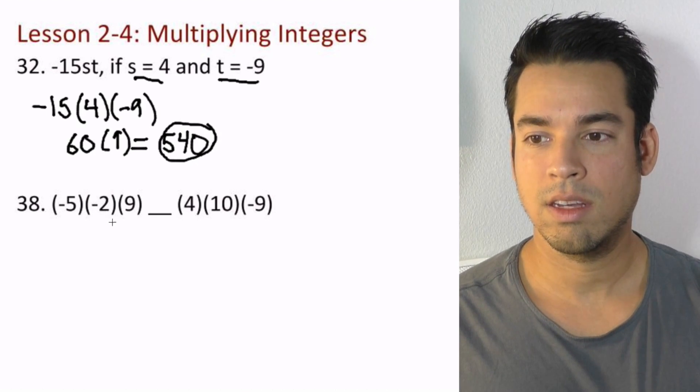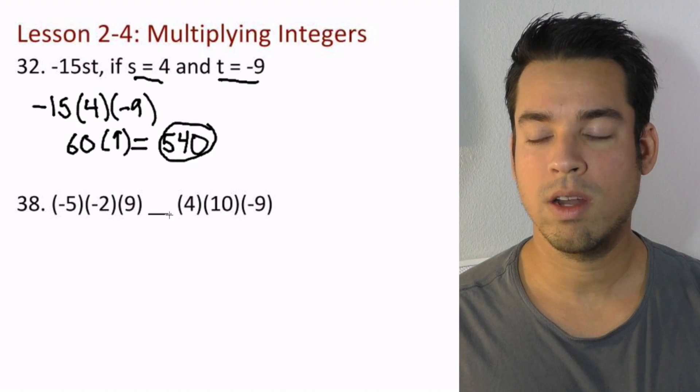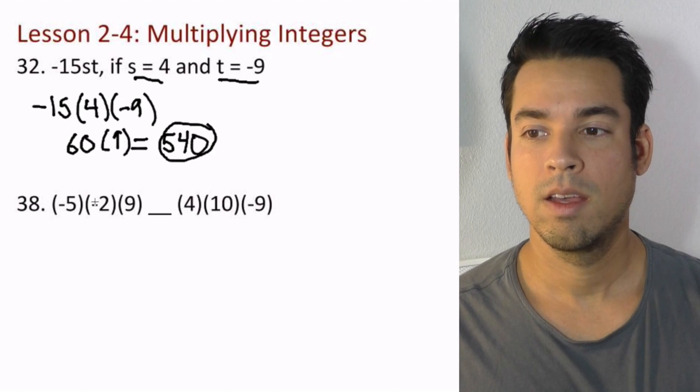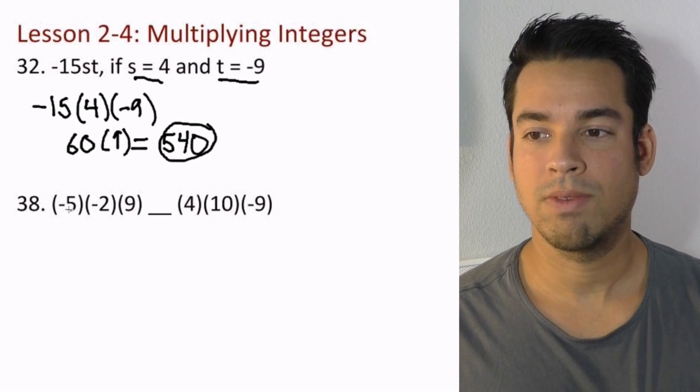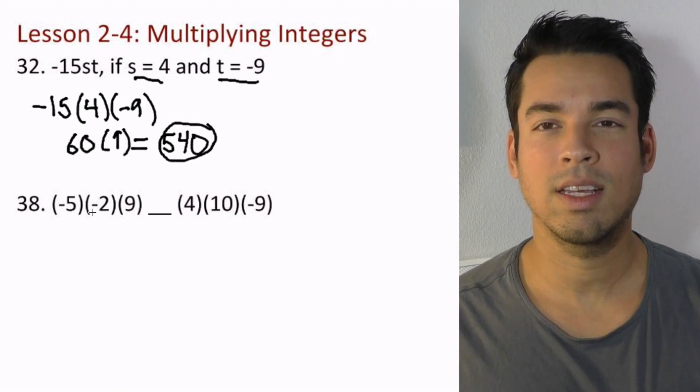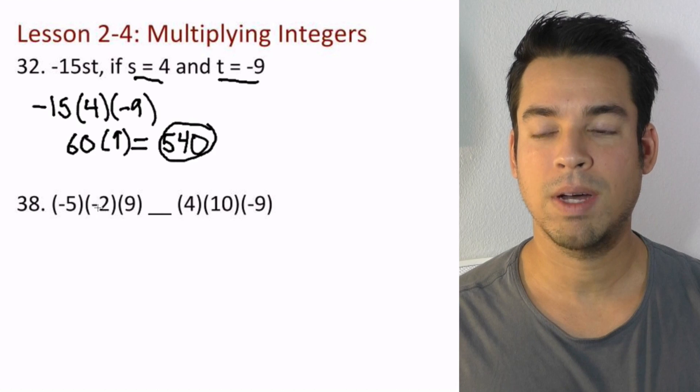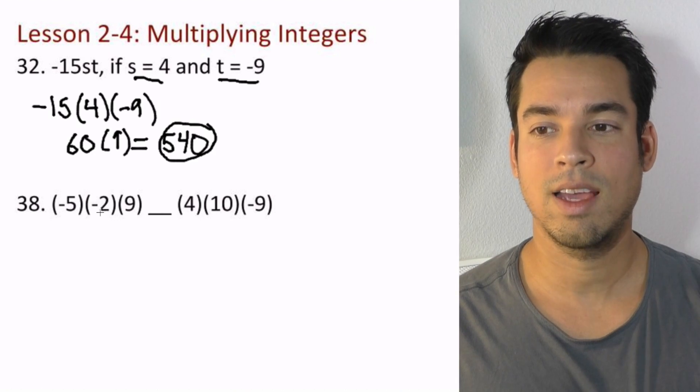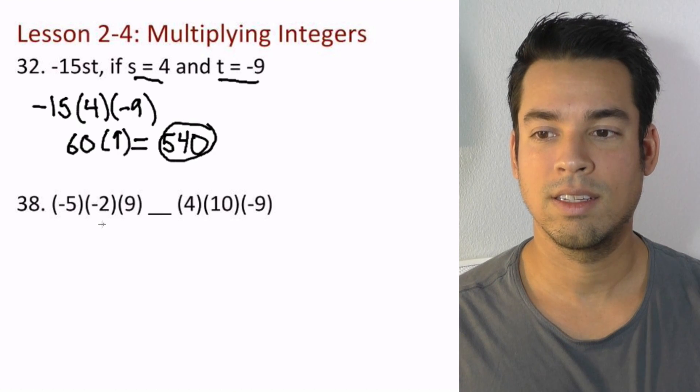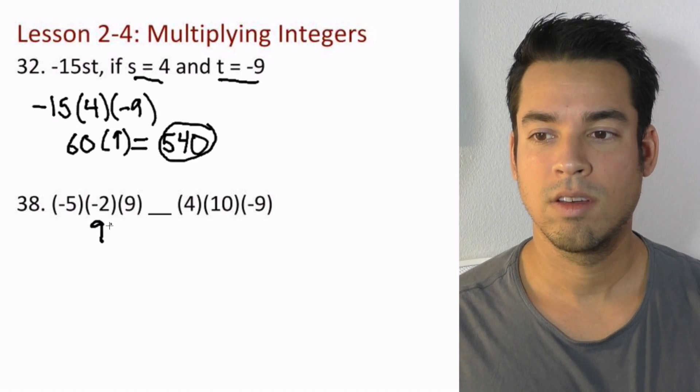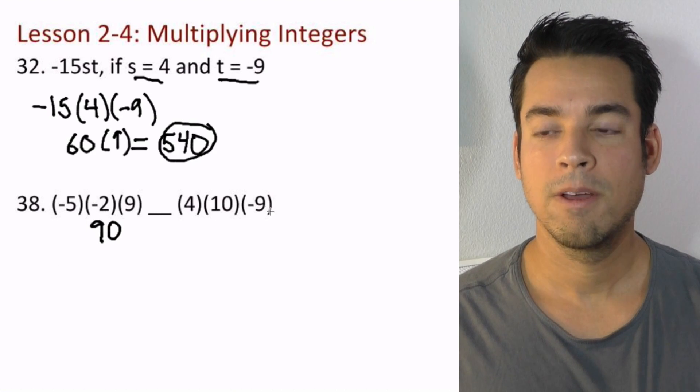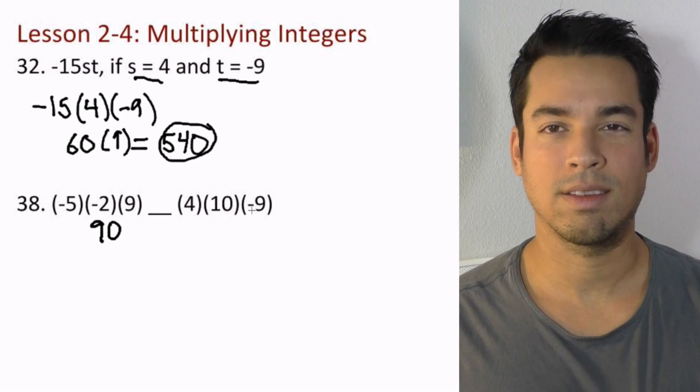Finally, let's get down to problem 38. We're trying to figure out which quantity is bigger: left side or maybe they're equal. Here we've got two negatives again. This guy is going to be positive because there's an even number. 5 times 2 is 10, times 9 is 90. But it doesn't even matter because this side is positive.